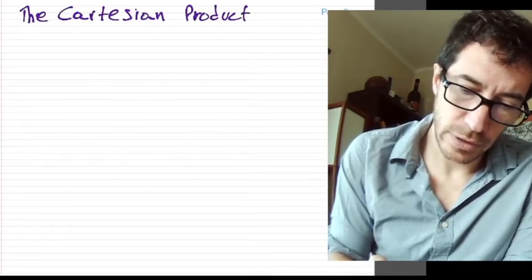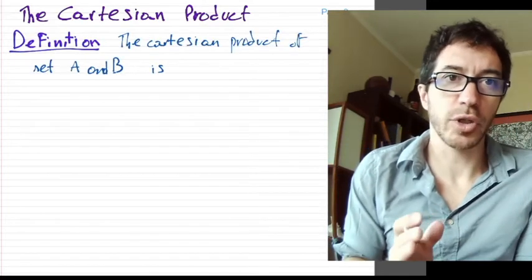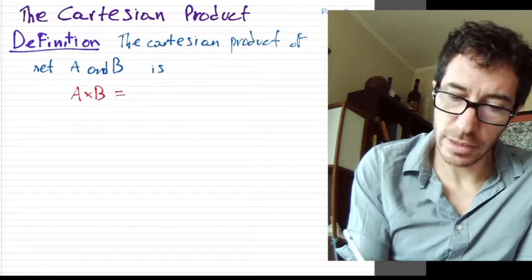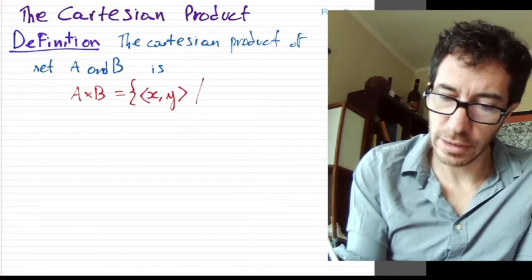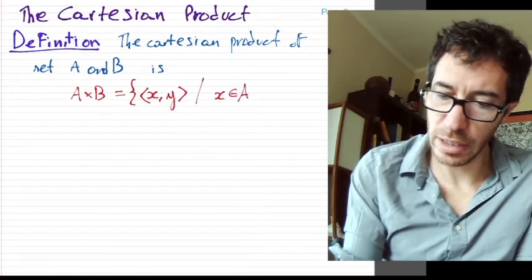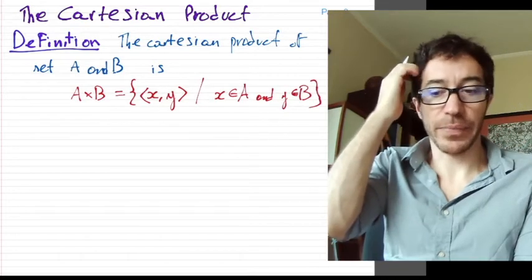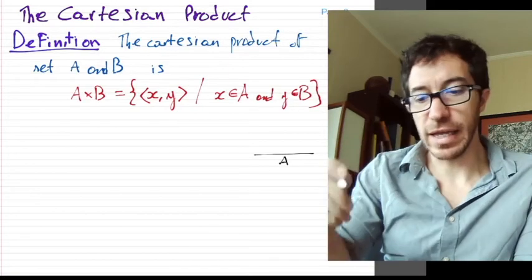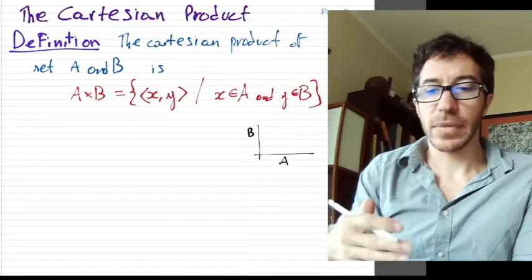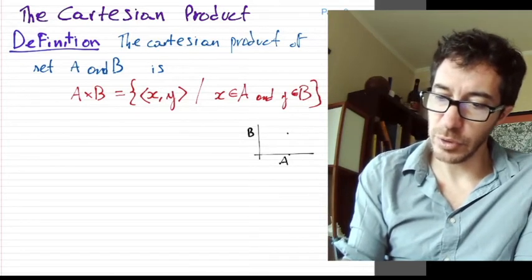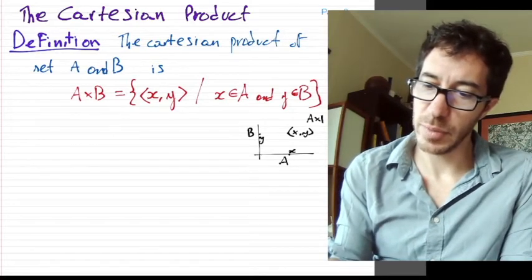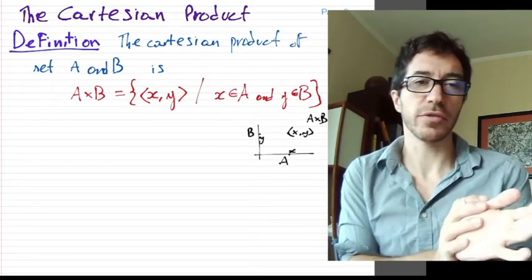The Cartesian product of two sets: the Cartesian product of A and B, written A × B, is defined to be the set of all pairs (x, y) such that x belongs to A and y belongs to B. If you put all the elements of A on one axis and all the elements of B on another, all the points in the plane represent pairs (x, y), and the whole plane represents A × B. So it's the set of all pairs where the first element comes from A and the second from B.